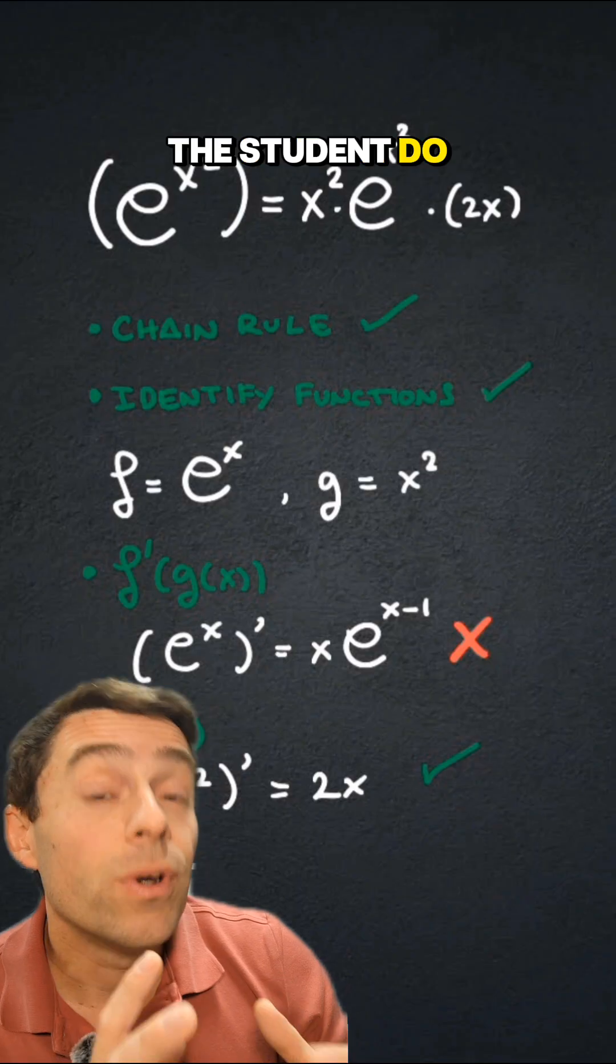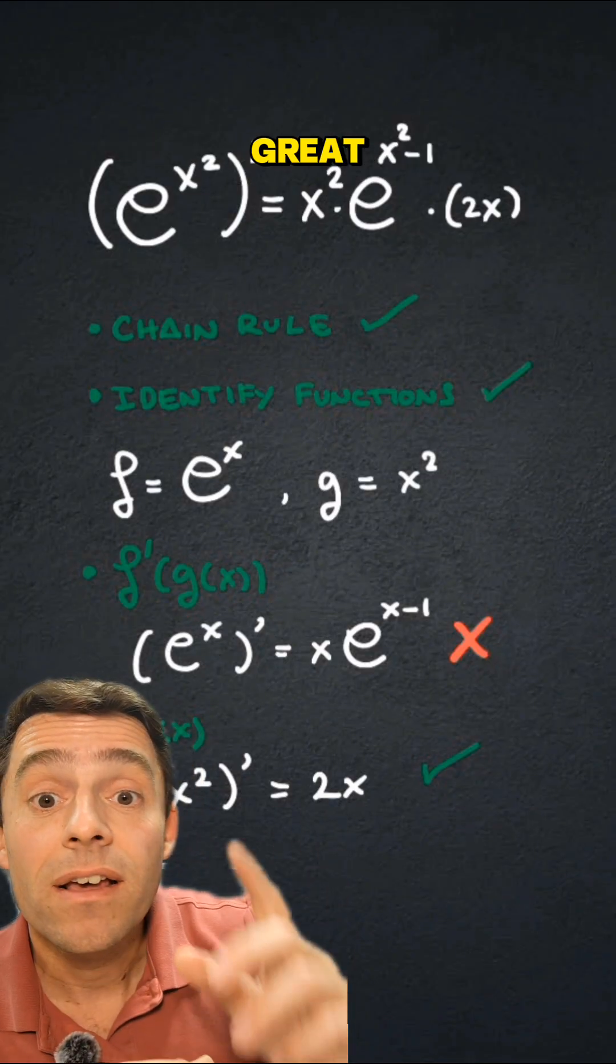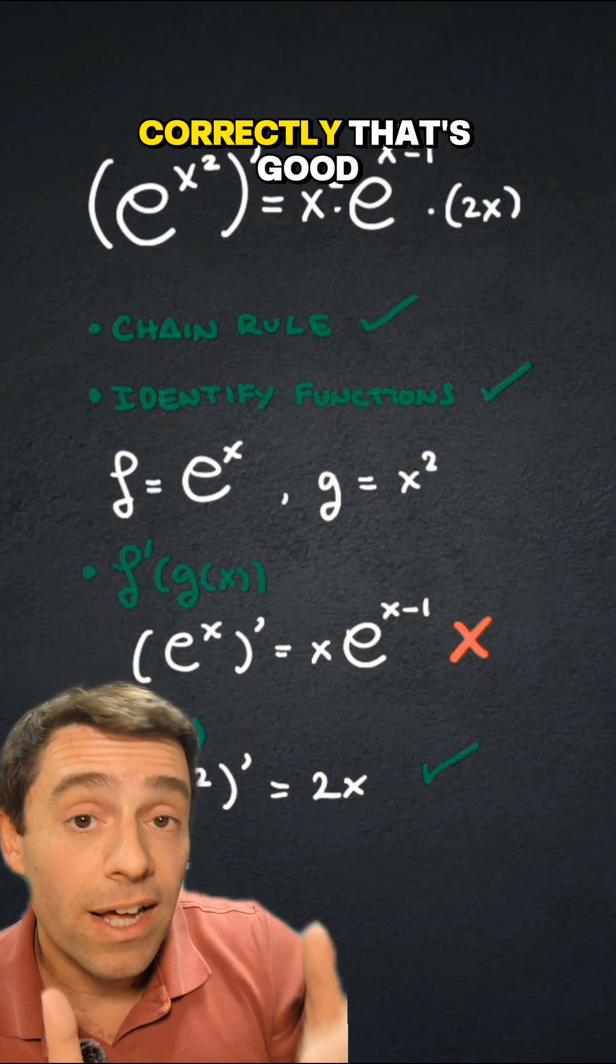So how did the student do? It looks like they identified that problem as a chain rule problem correctly, so that's great. It seems they identified the functions e to the x and x squared correctly. That's good.